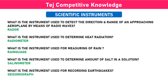What is the instrument used to determine heat radiation? Radiometer. What is the instrument used for measuring rain gauge? Rain gauge. What is the instrument used to determine amount of salt in a solution? Salinometer.